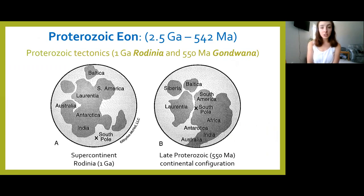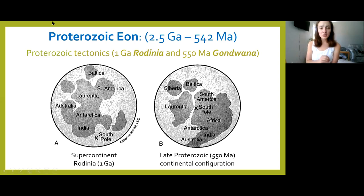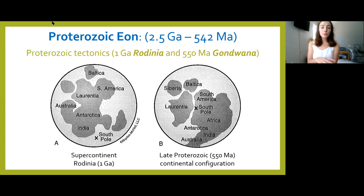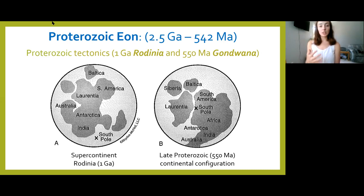Regarding tectonics during the Proterozoic: we knew the oceanic and continental crust differentiated and Laurentia formed in the Archean, but now during the Proterozoic — spanning over 2 billion years — we had a couple of supercontinents form. The first supercontinent was Rodinia, around one billion years ago. Later, in the late Proterozoic around 550 million years ago, we had the formation of Gondwana, or at least the beginnings of Gondwana.